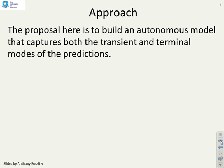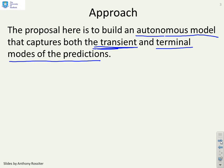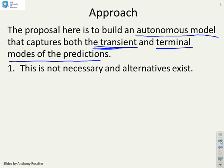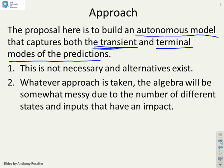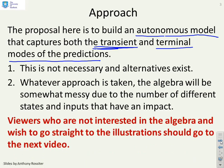The approach we're going to use here is the autonomous model approach. You'll find that in the literature very few people actually do it this way, but it's more convenient and transparent. We're going to use an autonomous model that captures both the transient mode and the terminal mode in a single model, so we're not dealing with two different modes and messy algebra combining them. It's not necessary to do it this way and alternatives do exist — whatever approach is taken the algebra will be somewhat messy. Viewers not interested in the algebra and just wanting to go straight to the illustrations should skip to the next video.